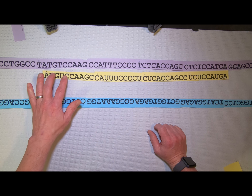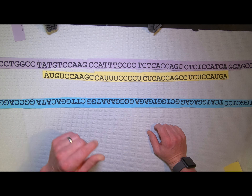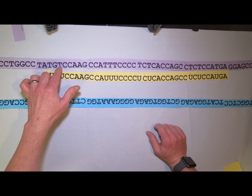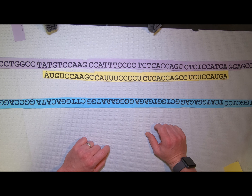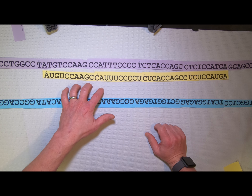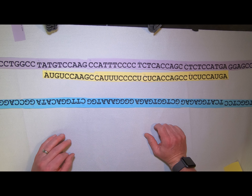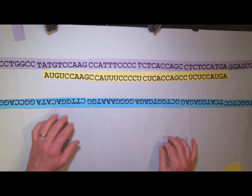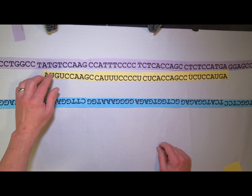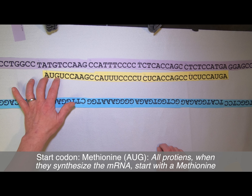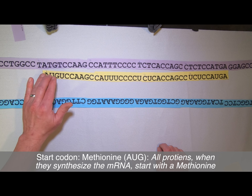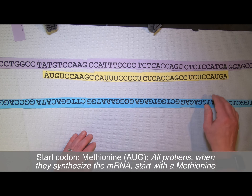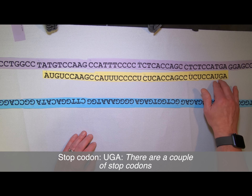The mRNA sequence is really close, and it's a similar molecule to DNA, but it doesn't have thymidine — it has uracil as the corresponding base to A. So what's your mRNA sequence? It starts here with the first codon, AUG, which is a start codon. All proteins start with a methionine when they synthesize from mRNA, and it ends with a stop codon — UGA in this case. There are a couple of stop codons, and this is one of them.